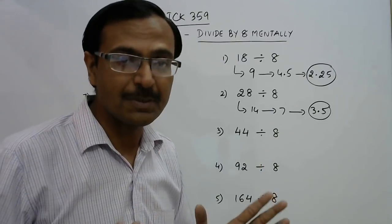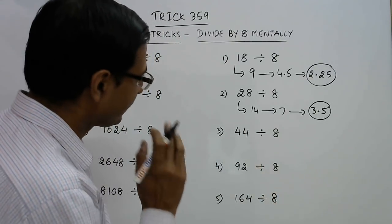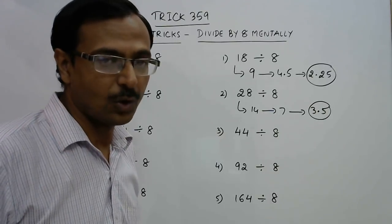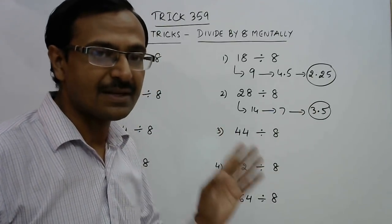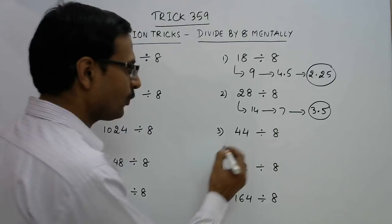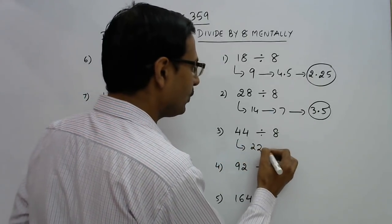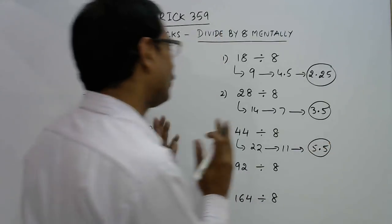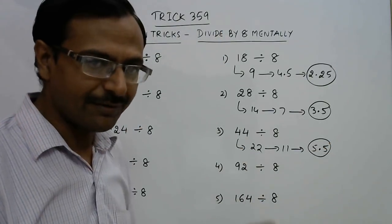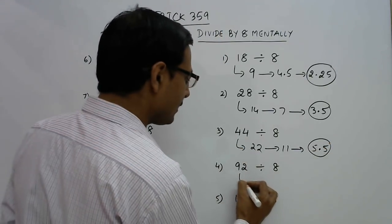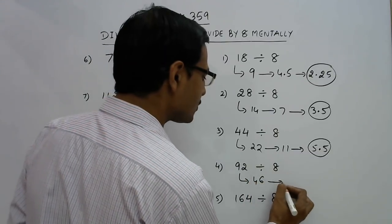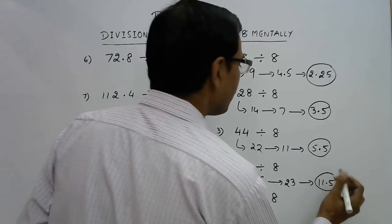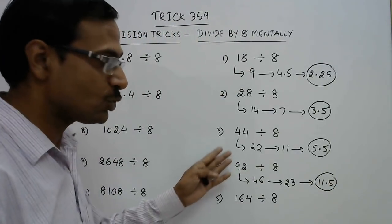44 becomes 22, 22 becomes 11, 11 becomes 5.5. So 44 divided by 8 is 5.5. 92 becomes 46, 46 becomes 23, 23 becomes 11.5. So 11.5 is the quotient when you divide 92 by 8.